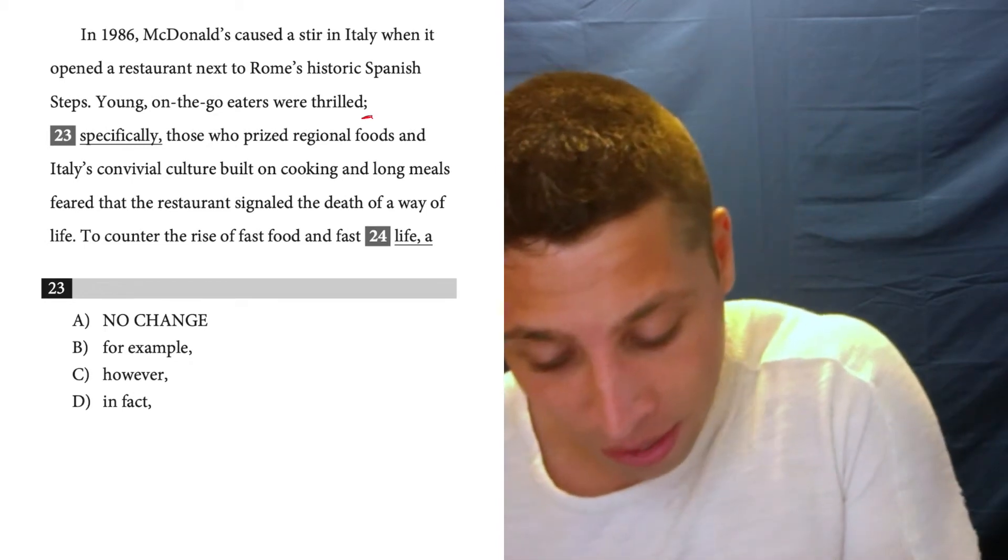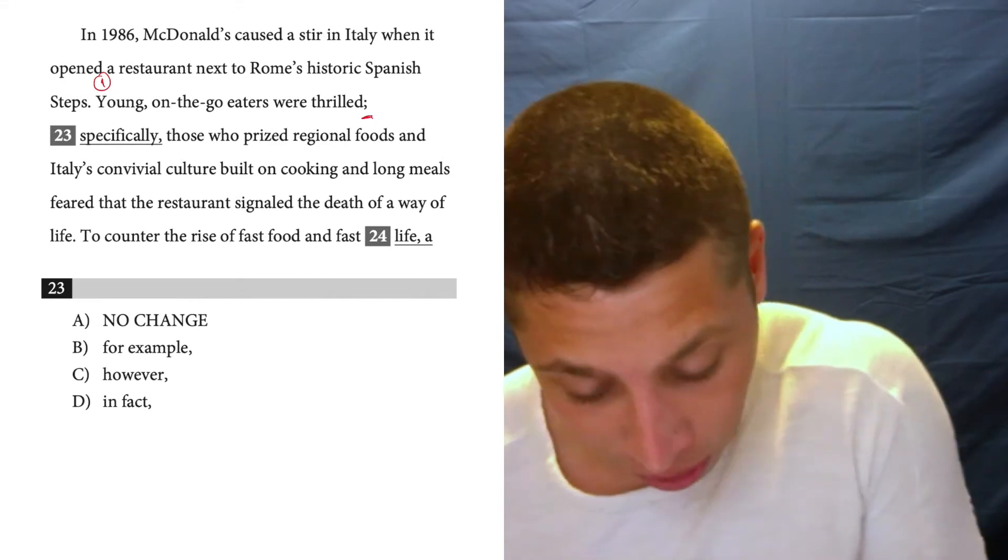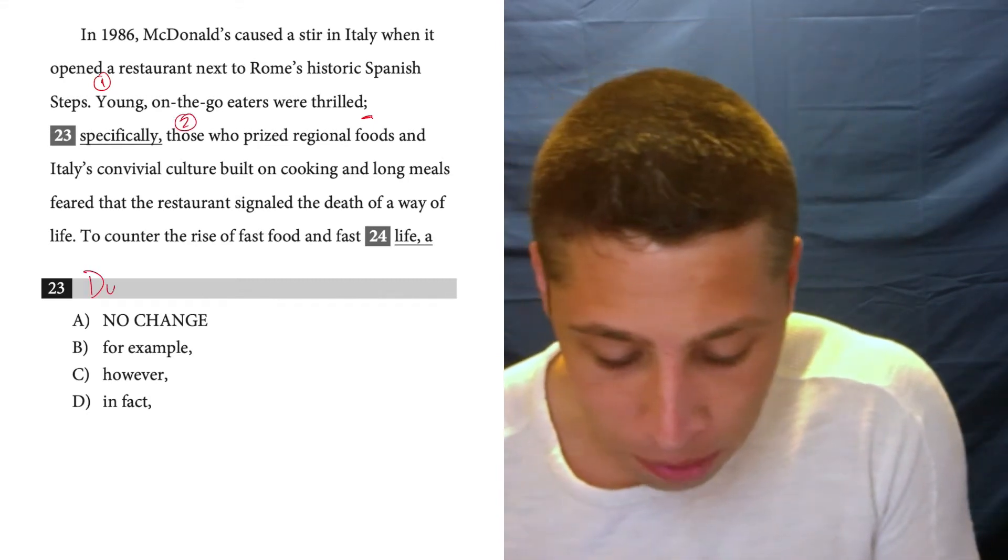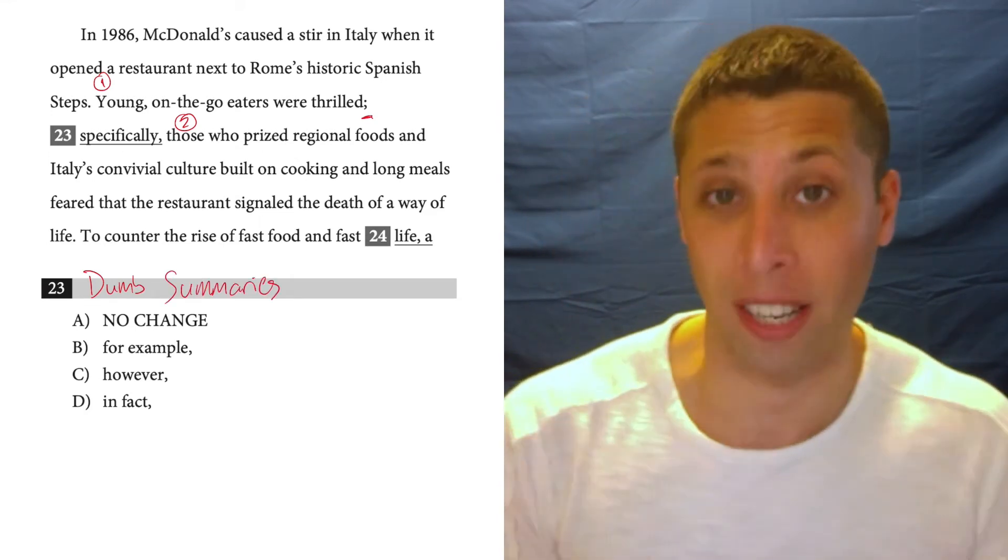So in this case, we want something like this being our first sentence and then starting here with those, that's kind of our second sentence. And if we use dumb summaries, we should be able to understand the relationship between those two sentences.